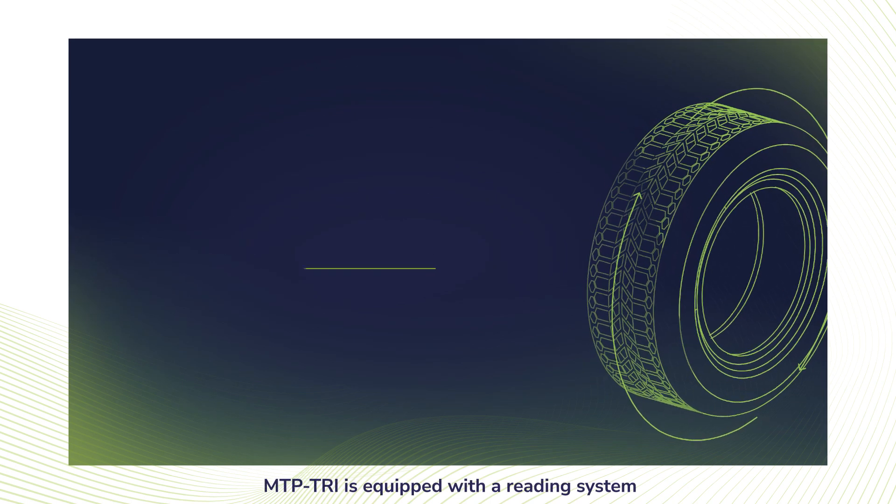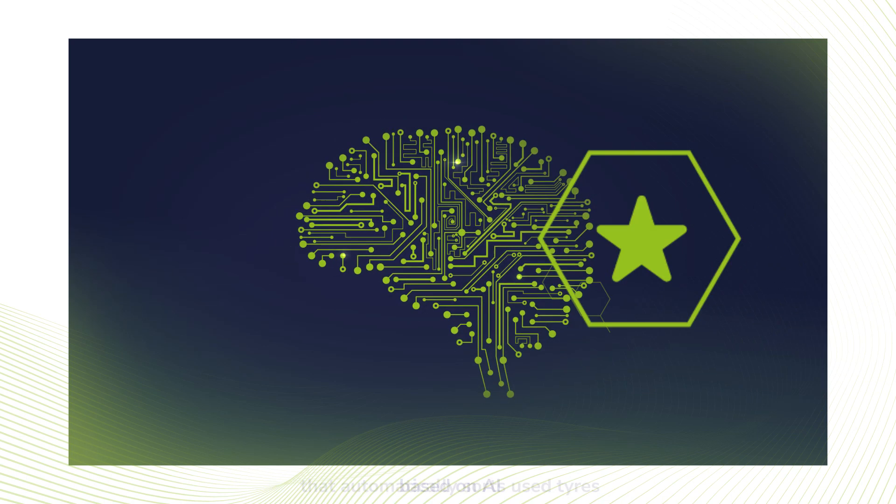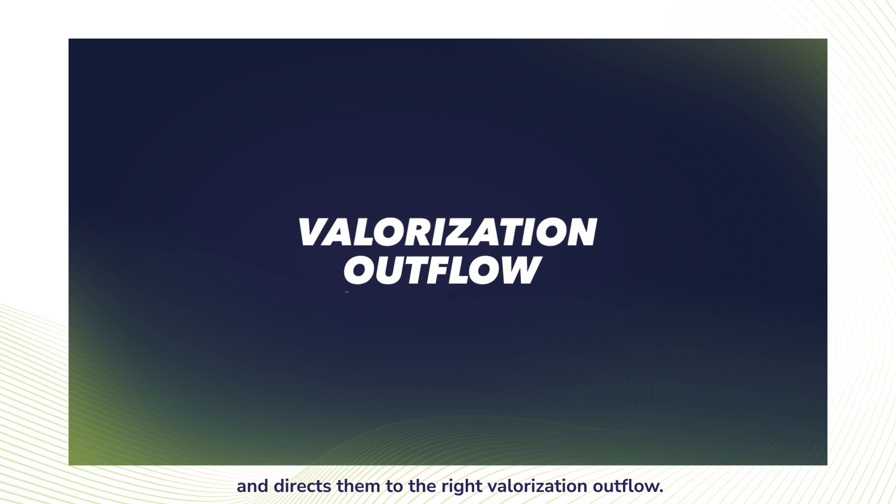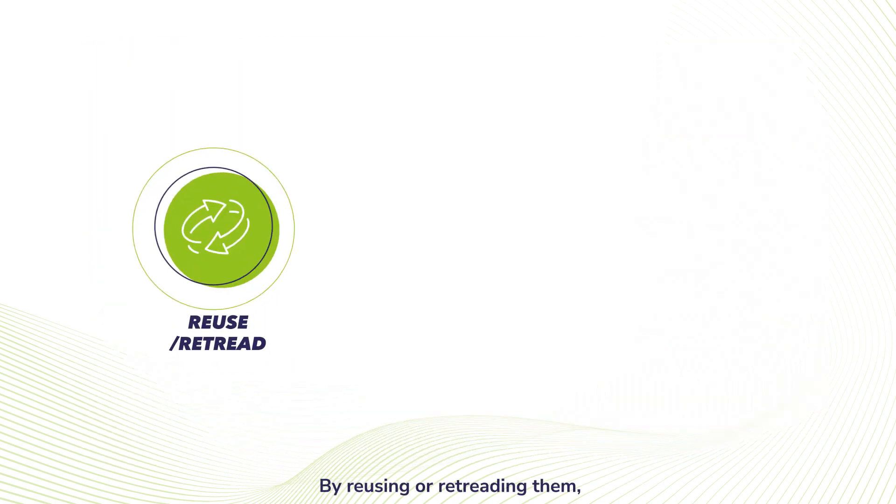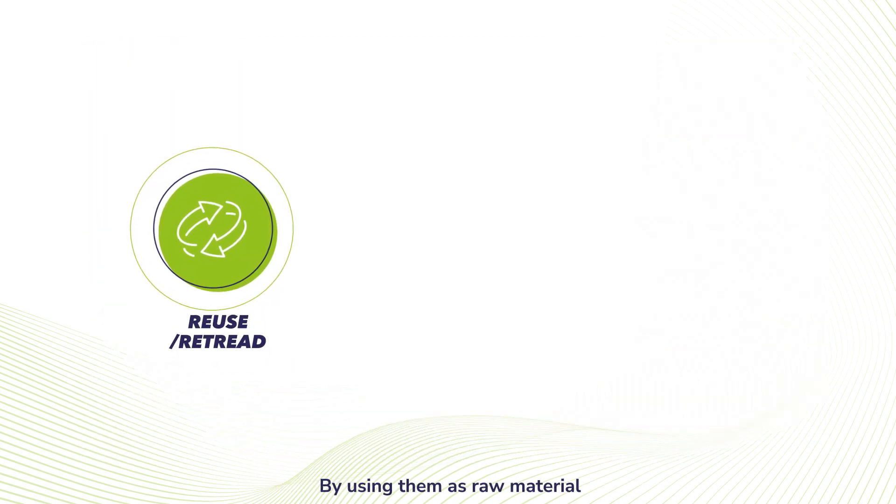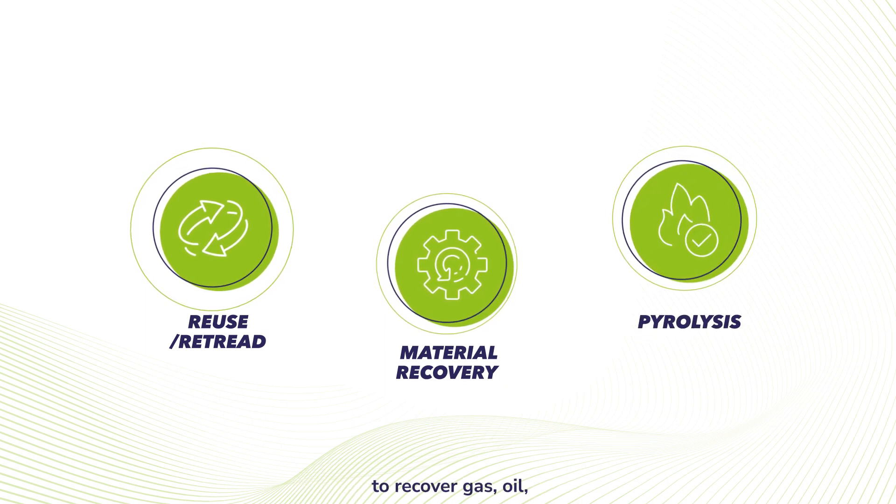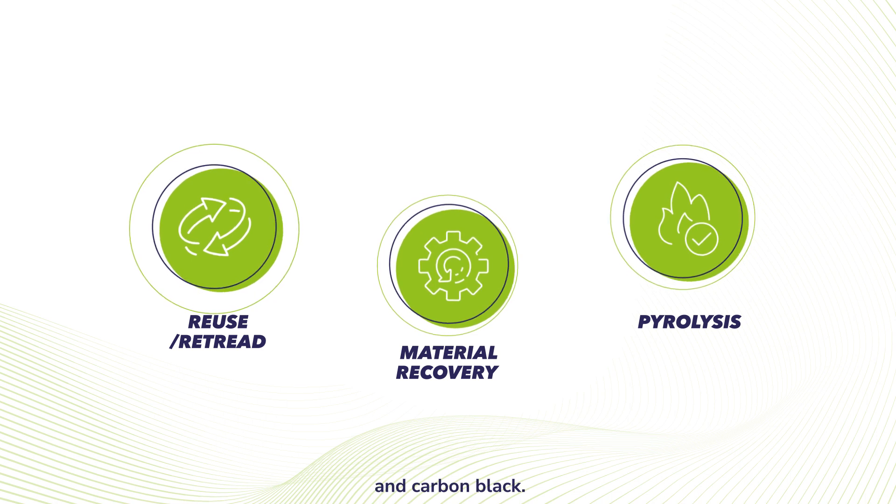MTP-TRI is equipped with a reading system based on AI that automatically sorts used tires and directs them to the right valorization outflow: by reusing or retreading them, by using them as raw material for the manufacture of new products, or by separating them with pyrolysis to recover gas, oil, and carbon black.